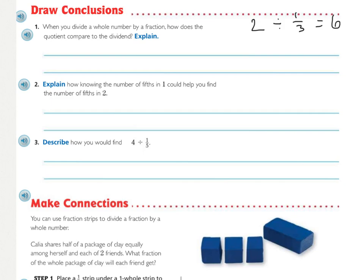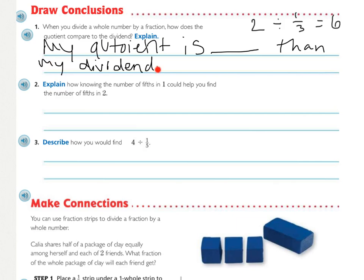Looking at the draw conclusions, now this is where they're trying to get you to think deeper about this and understand why what you're doing works. So when you divide a whole number by a fraction, how does the quotient, remember that's the answer, compare to the dividend? That is the number that you're dividing. So they're asking how does the quotient right here in two divided by one third equals six. The quotient is six compared to the two. How do they compare? I'd like you to finish the sentence. My quotient is blank than my dividend. What would be the best word to fill in that sentence? You should use the word greater than my dividend.